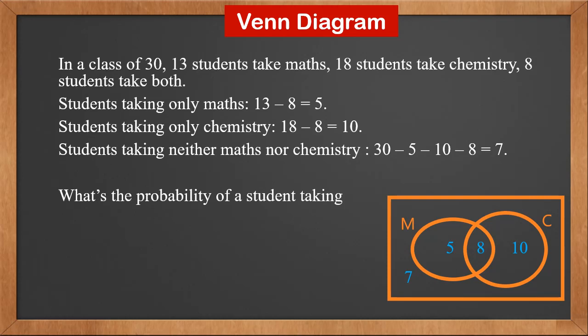What's the probability of a student taking both math and chemistry? It's the common area of M and C. So probability of M intersection C is 8 over 30.